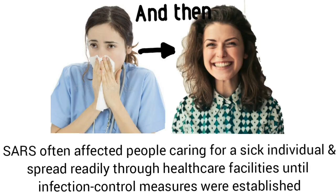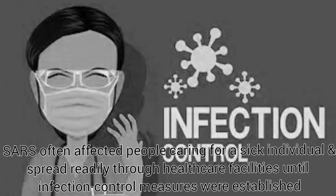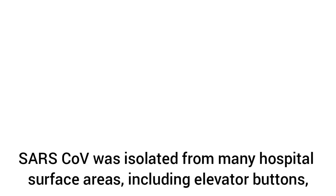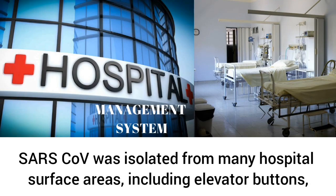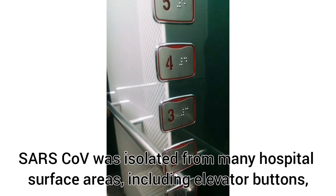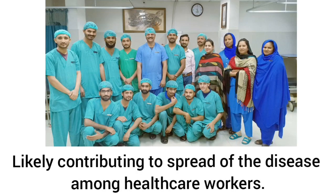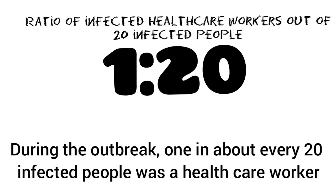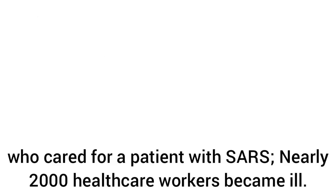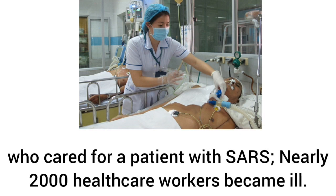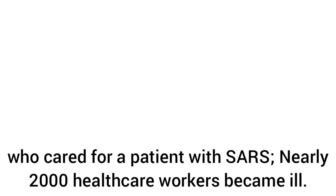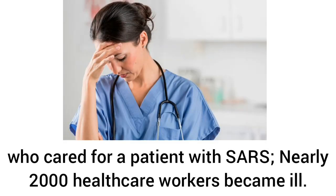SARS-CoV is spread from person to person through respiratory secretions. SARS often affected people caring for a sick individual and spread readily through healthcare facilities until infection control measures were established. SARS-CoV was isolated from many hospital surface areas, including elevator buttons, likely contributing to the spread among healthcare workers. One in about every 20 infected people was a healthcare worker, and nearly 2,000 healthcare workers became ill.